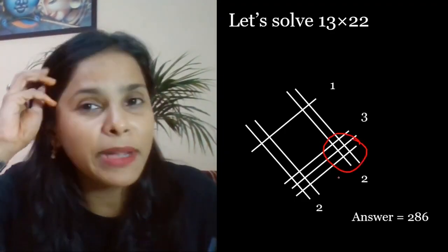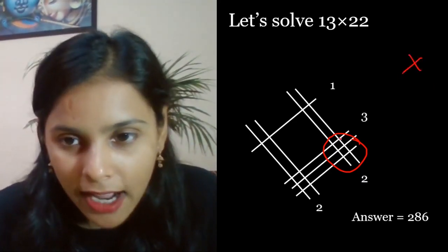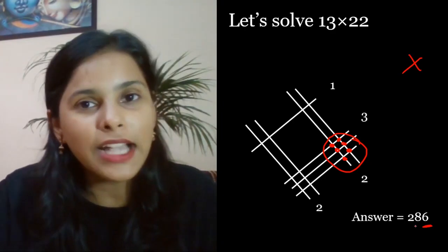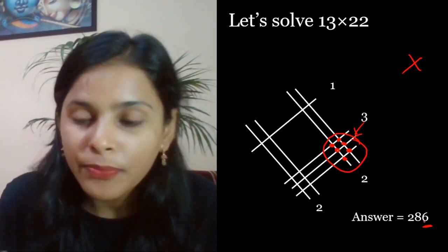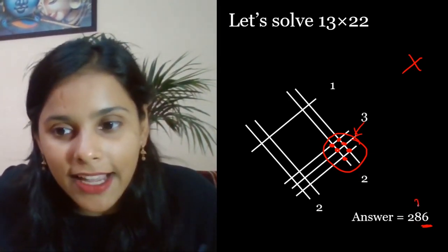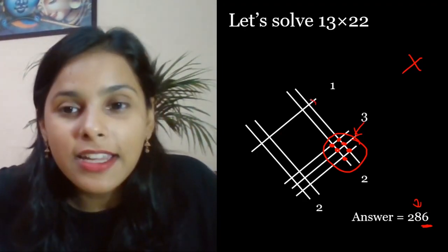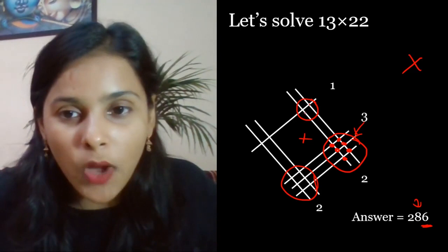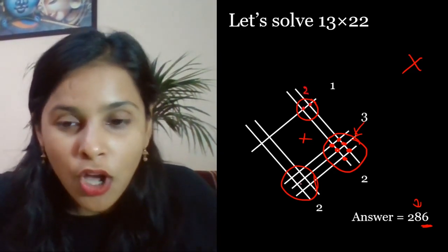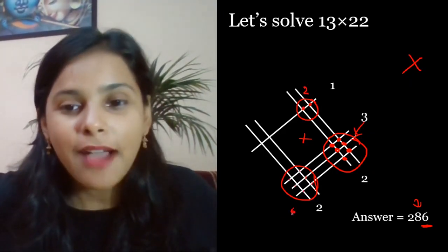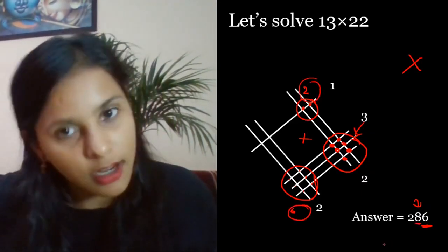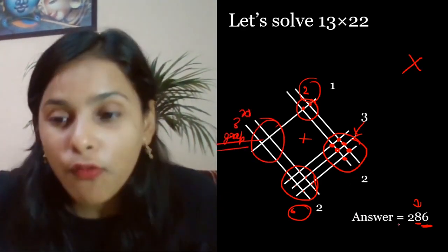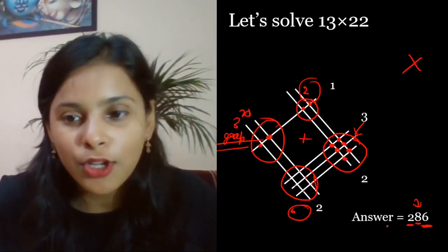Check it out, count where the lines cross. 1, 2, 3, 4, 5, 6, so the answer's last digit is 6. Now the middle is where these groups intersect. 1, 2 where they intersect here, 1, 2 here, 2 here, 1, 2, 3, 4, 5, 6. Add them, 2 plus 6 is 8. So the middle number is 8. This third group, where they intersect, is 1, 2. So this is your answer.